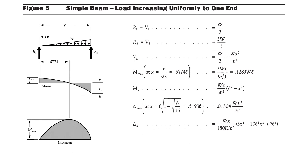The reactions for this triangular load case are: R1 = w/3 at the zero-load end, and R2 = 2w/3 at the end carrying load w. To summarize: maximum bending moment is 2wl/9√3 occurring at 0.5774l, and maximum deflection is 0.1304wl³/EI occurring at 0.5193l. The triangular load varies from 0 at one end to w at the other.